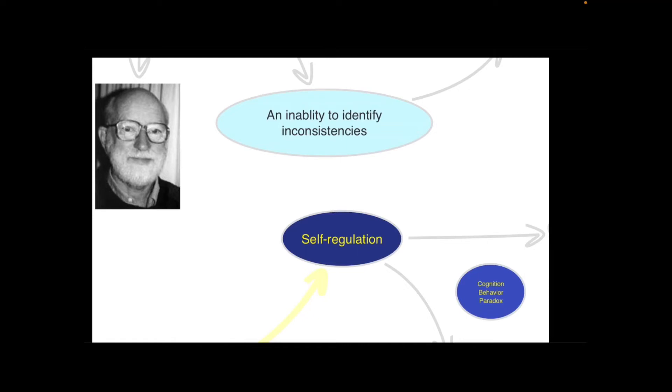And so this leads to this sort of weird cognitive behavioral paradox which is where does our understanding and behavior come from. Does our behavior come from our ability to understand and see the inconsistencies in what we need to do.